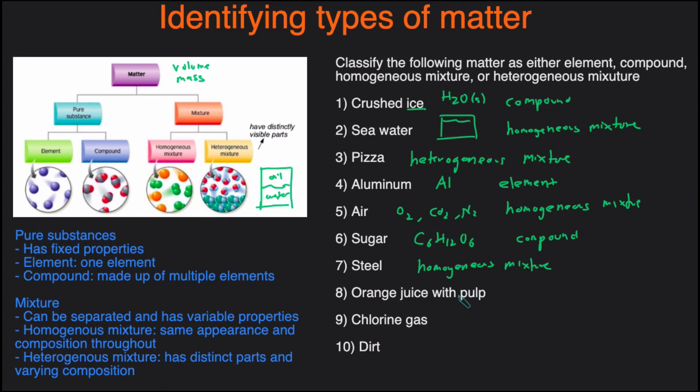Next one, orange juice with pulp. This one should be a pretty easy one if you just think about if you had a glass of orange juice with pulp on the bottom. This is for sure going to be a mixture because you have water in there, you have orange, but there's different sections. You can see the pulp on the bottom and then the juice on the top. So this is going to be a heterogeneous mixture. This has pretty distinct parts.